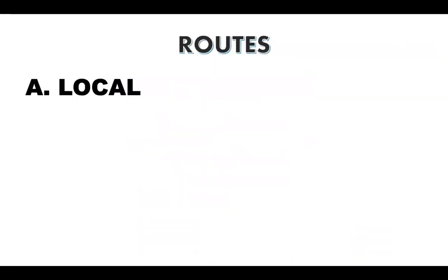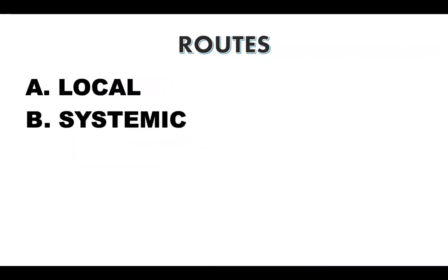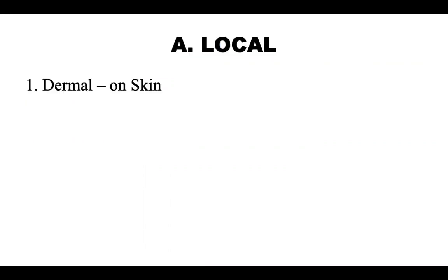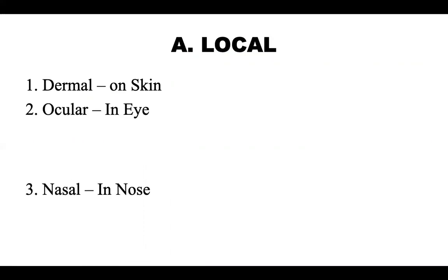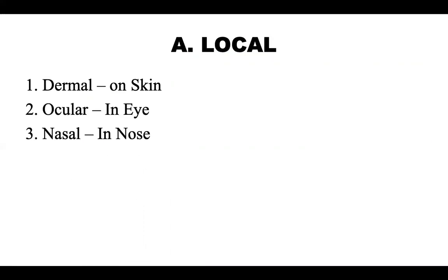Routes can be of two different types: one is local and another one is systemic. Under local routes, the first one is thermal, the second one is ocular, and the third one is nasal.